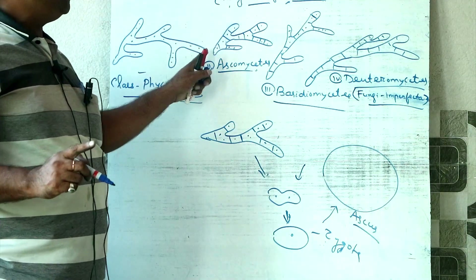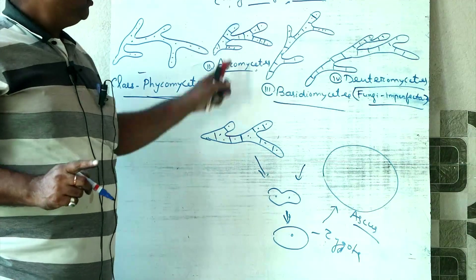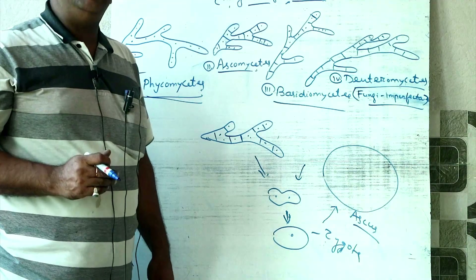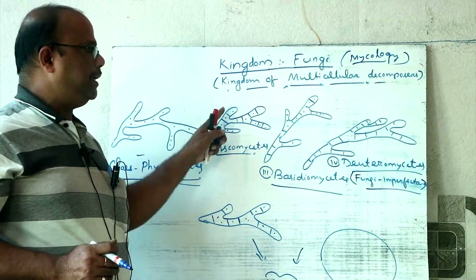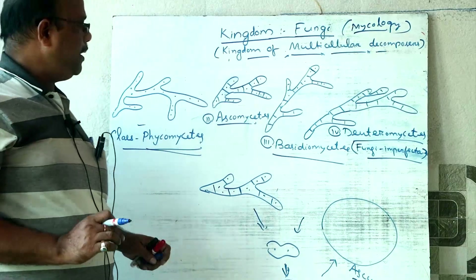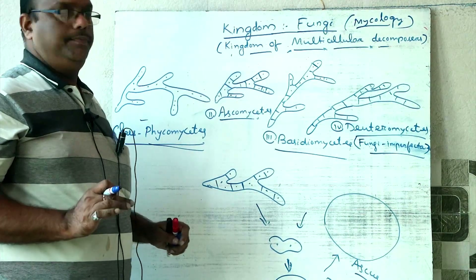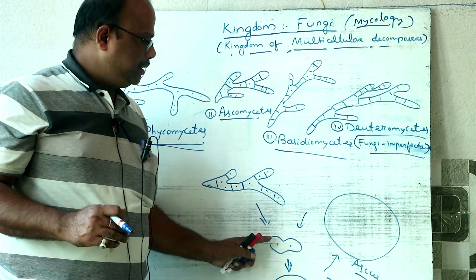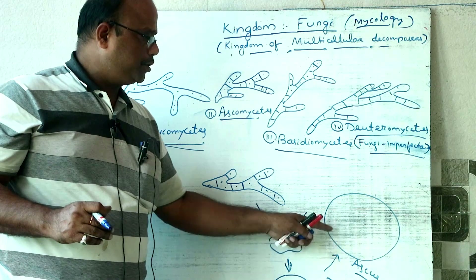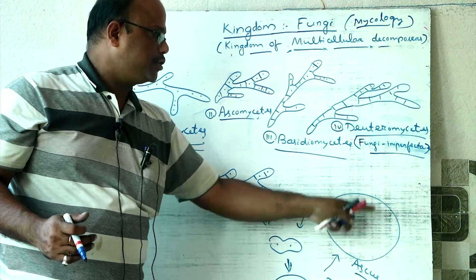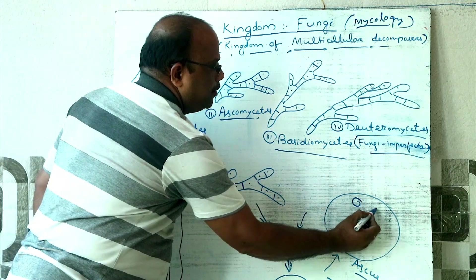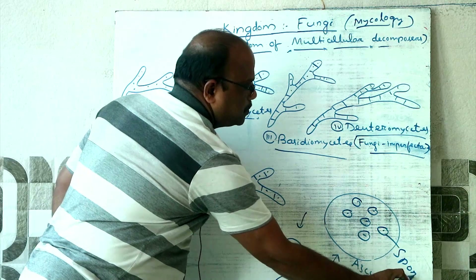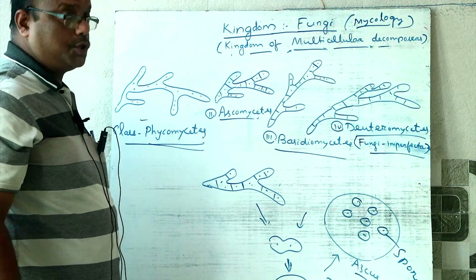This sac-like structure is called ascus. The mycelium is septate, confirming this is higher fungi. Asexual reproduction occurs by conidia — detachable sporangia. During sexual reproduction, gametes fuse to form a zygote, which develops into the ascus, within which small haploid spores are formed called ascospores.